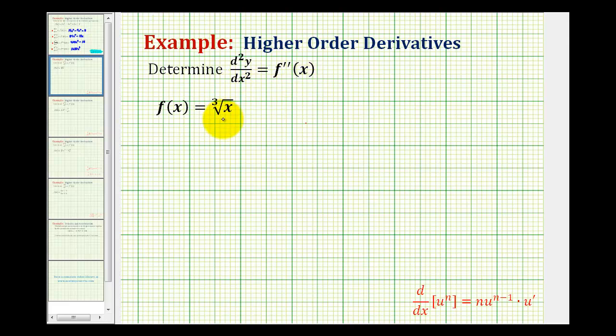We want to determine the second derivative of the given function. By now we know the first thing we need to do is rewrite this radical using a rational exponent. Since this is the cube root of x to the first, we can rewrite this as x to the power of one third.